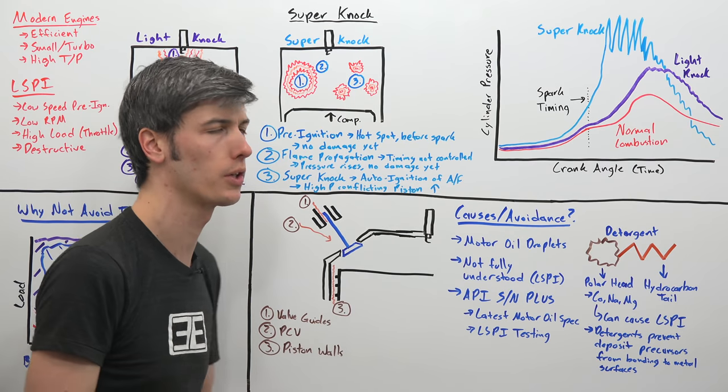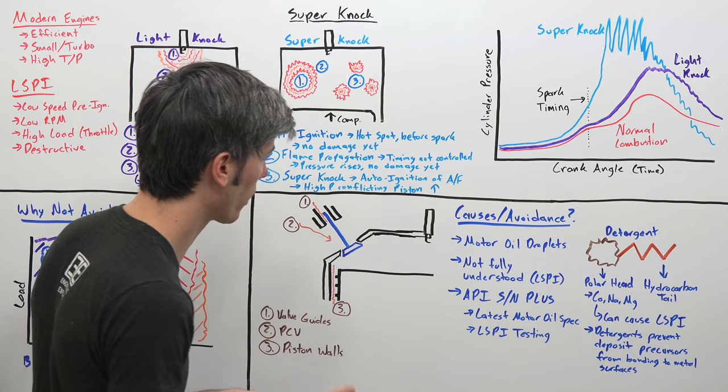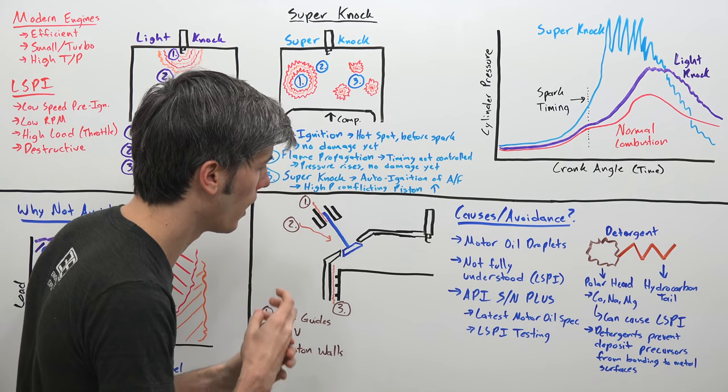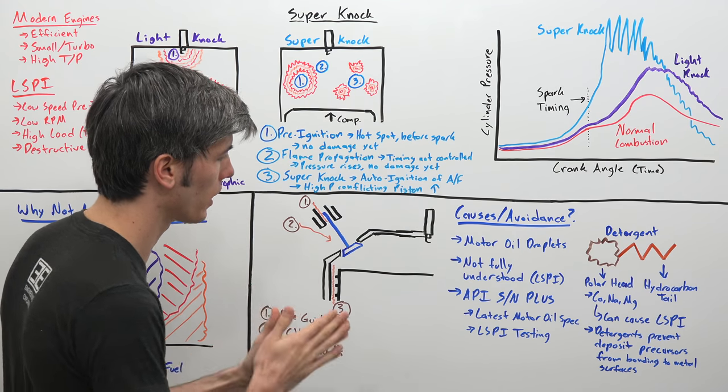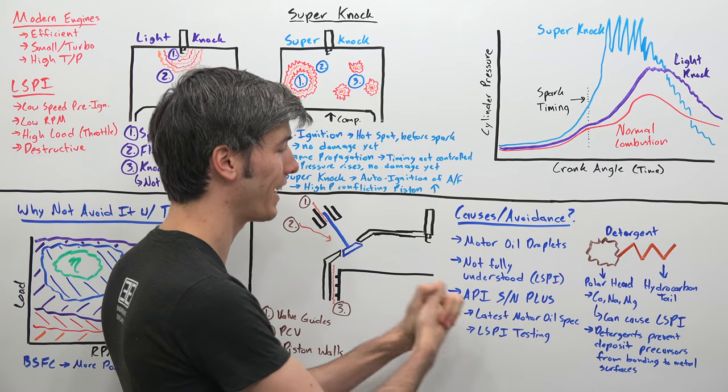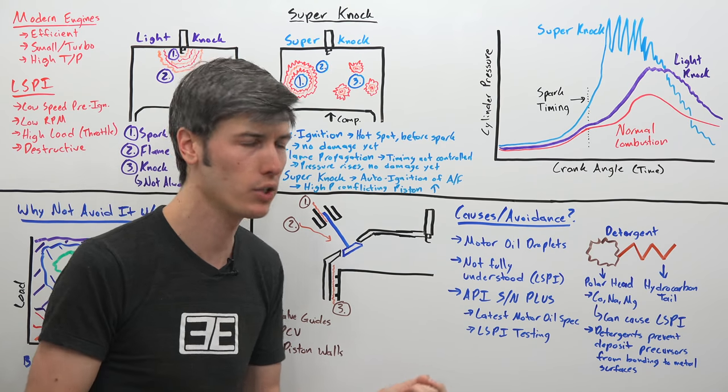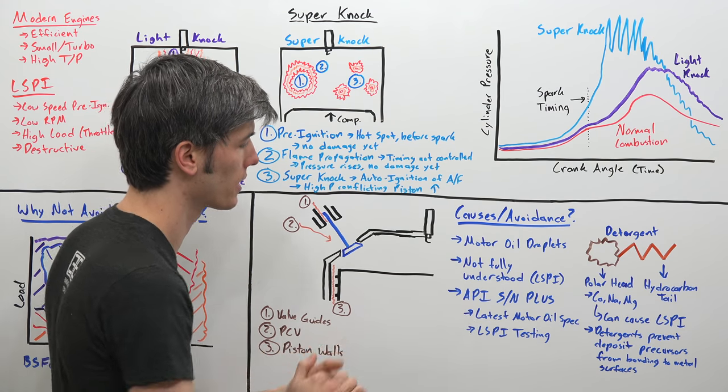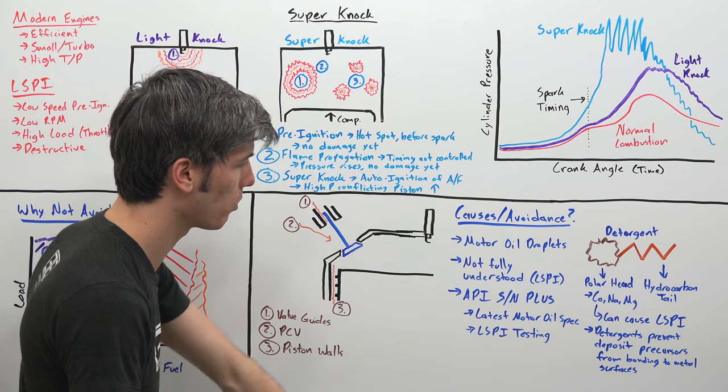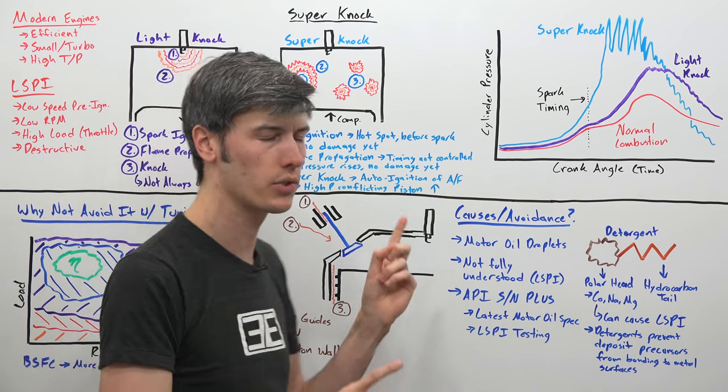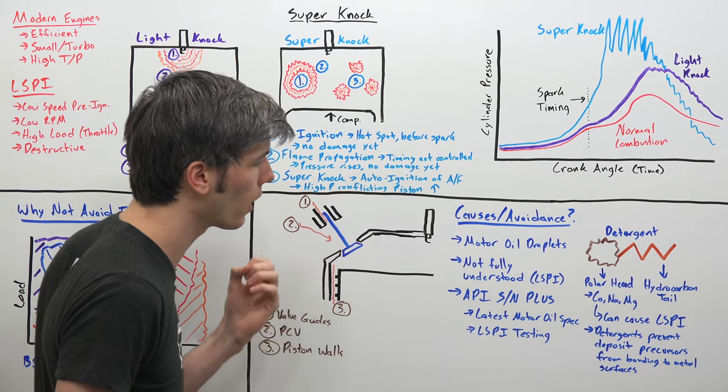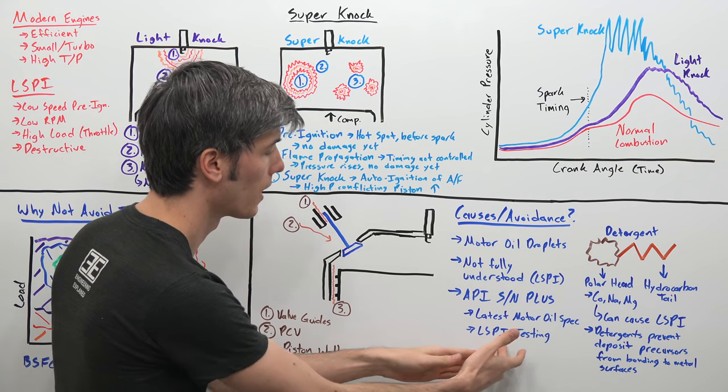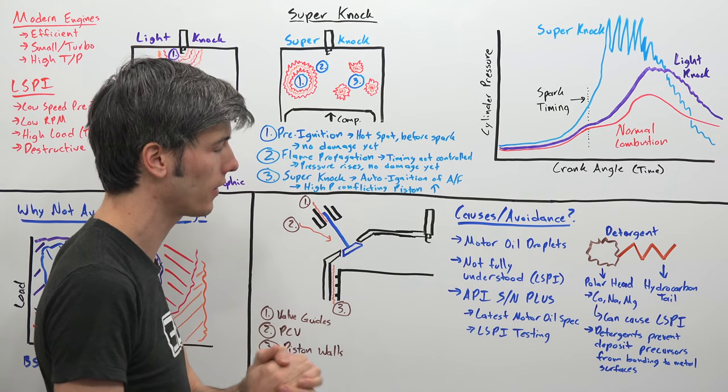This oil's formulation can have an effect on LSPI occurring. The American Petroleum Institute has created a new version, a new specification, their latest motor oil specification, API SN Plus. And within this specification, they have LSPI testing which oils have to pass in order to get this API SN Plus label. I was actually talking with some engineers at Valvoline and saying, hey, how are you guys able to change your formula to allow for it to prevent LSPI from occurring and pass this LSPI testing?